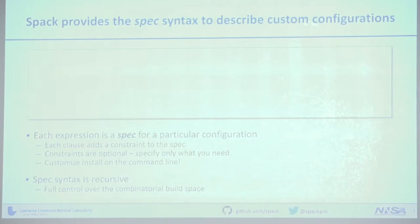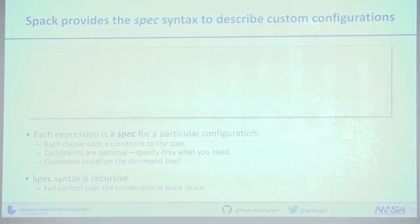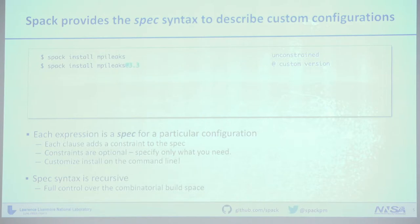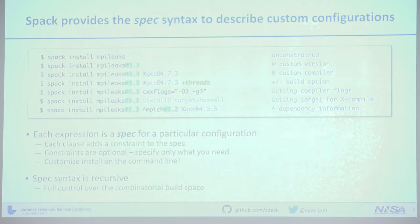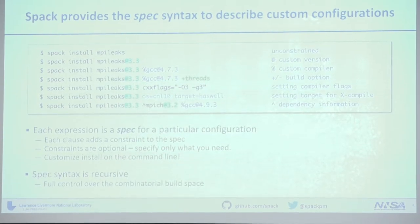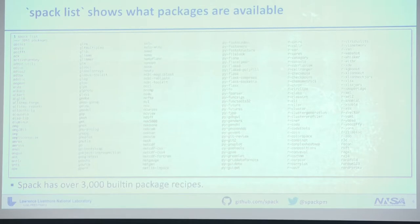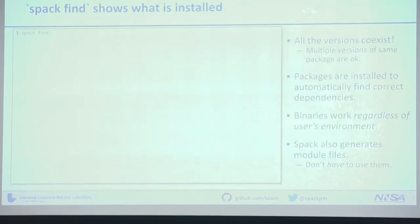To have all of that power, we need a language to specify what we want to install. The most basic is just 'spack install mpileaks' — a package we picked semi-randomly as an example. We can specify the version, the compiler and compiler version, build options exposed through the package file, compiler flags, targets for cross-compile environments like a Cray machine, and all of that information about dependencies as well. This is a recursive language; all options are optional — just specify what you know you need and Spack will fill in defaults for the rest.